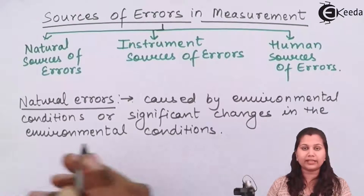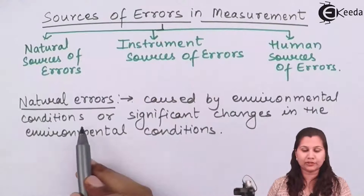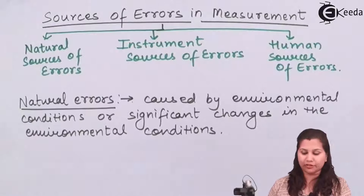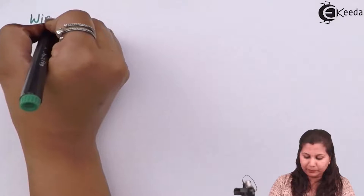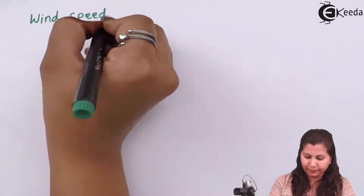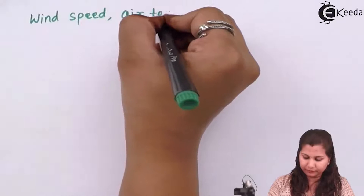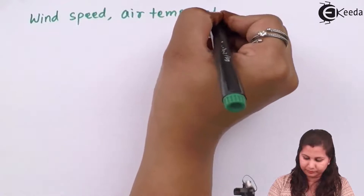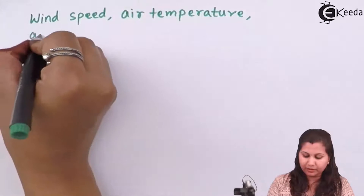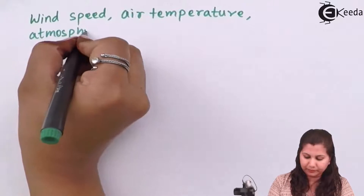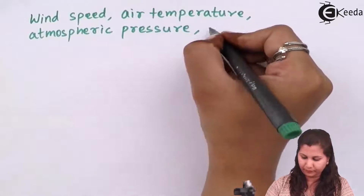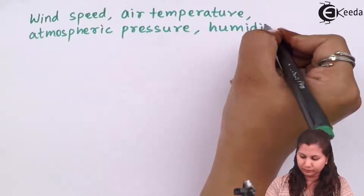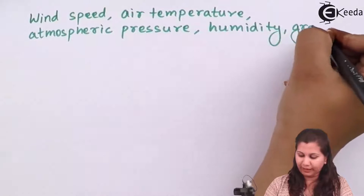Natural errors are caused by environmental conditions or significant changes in environmental conditions. These environmental conditions include wind speed, air temperature, atmospheric pressure, temperature, and humidity.